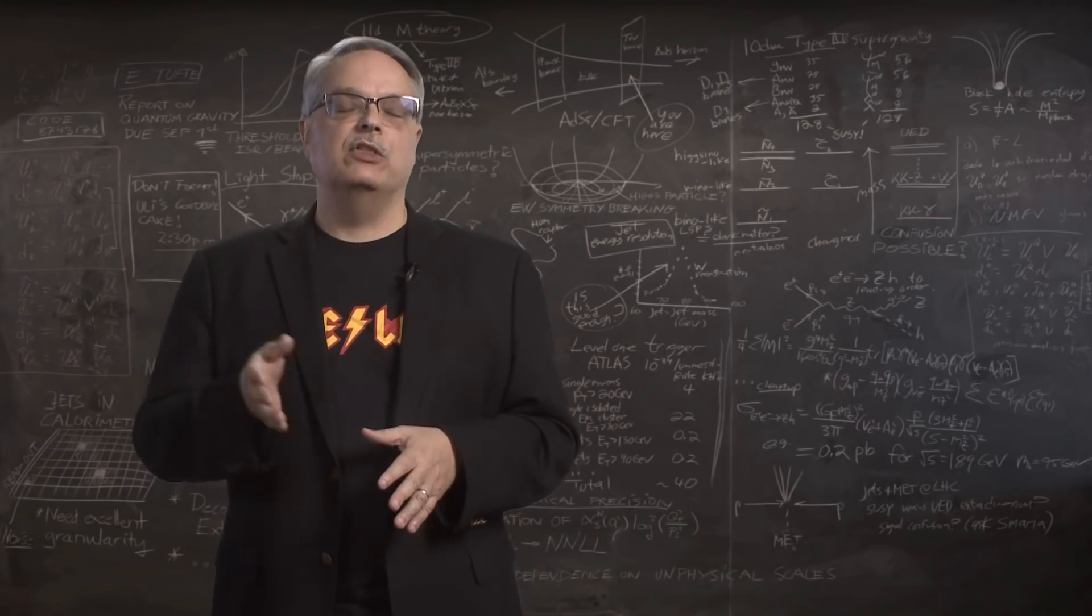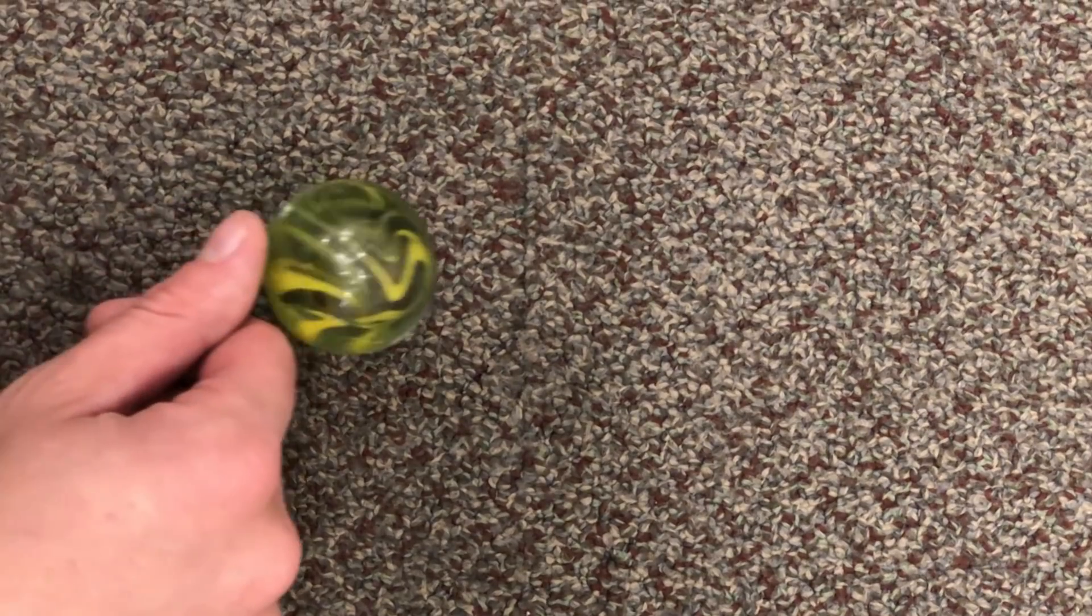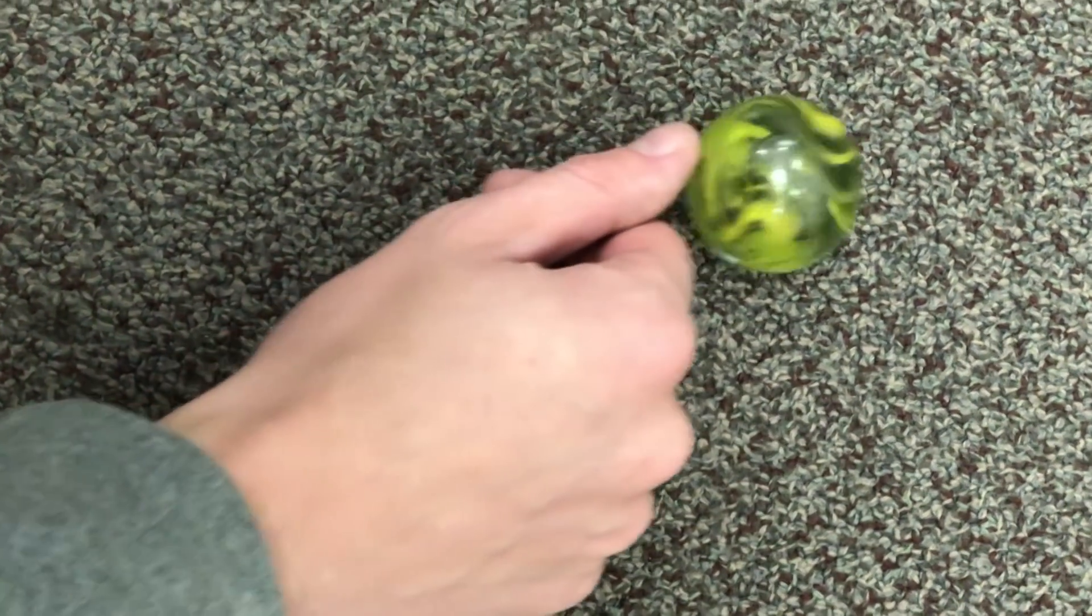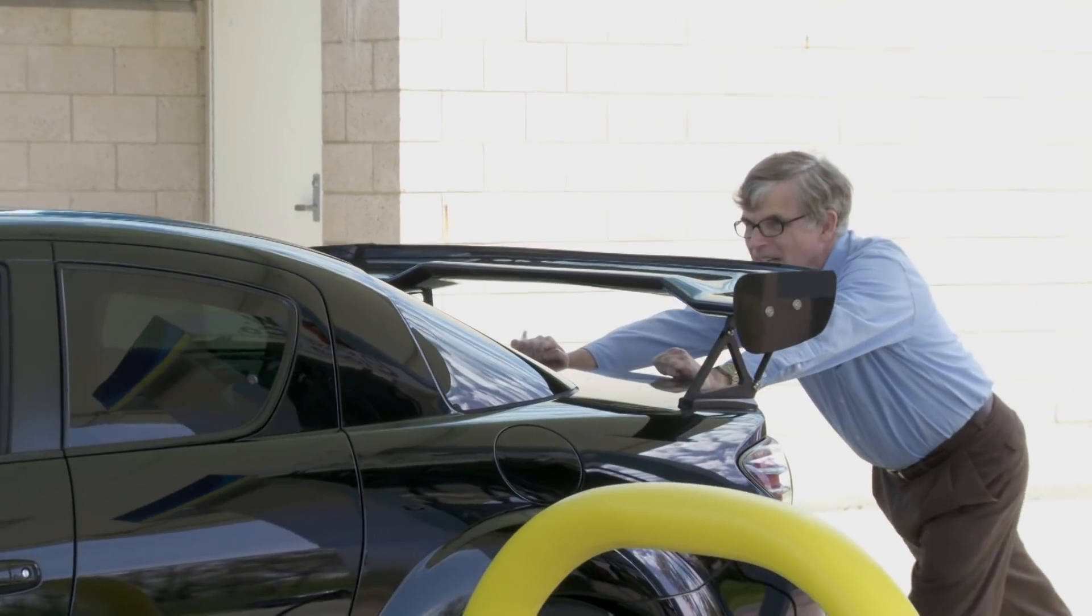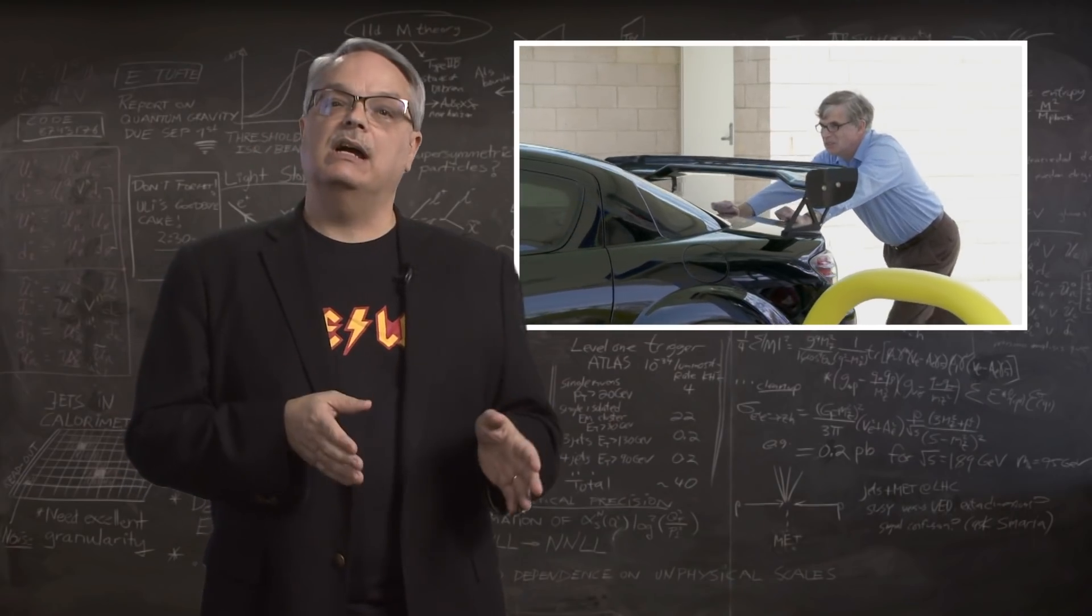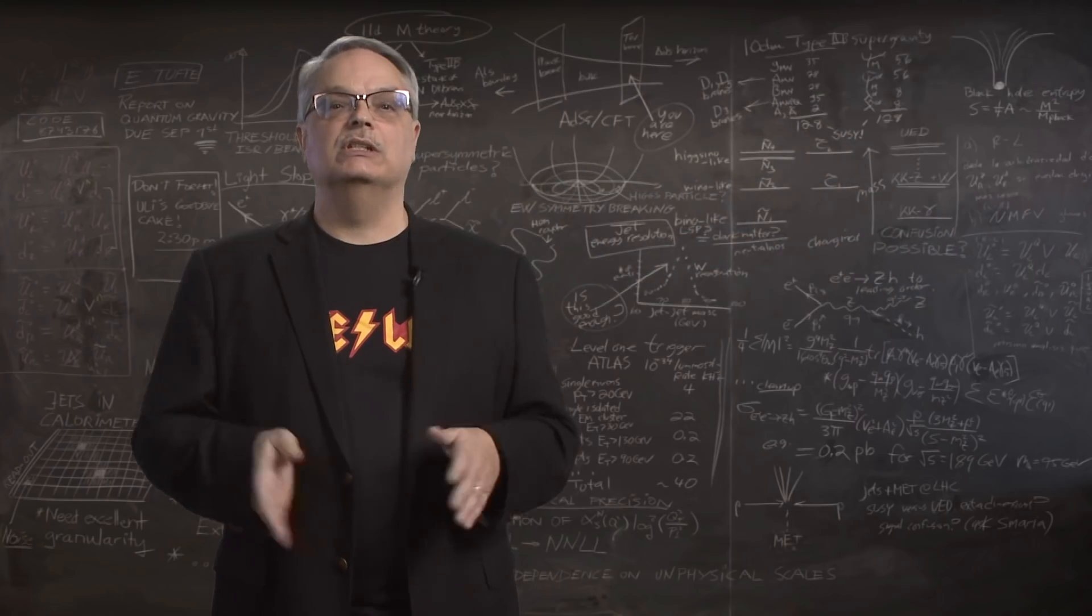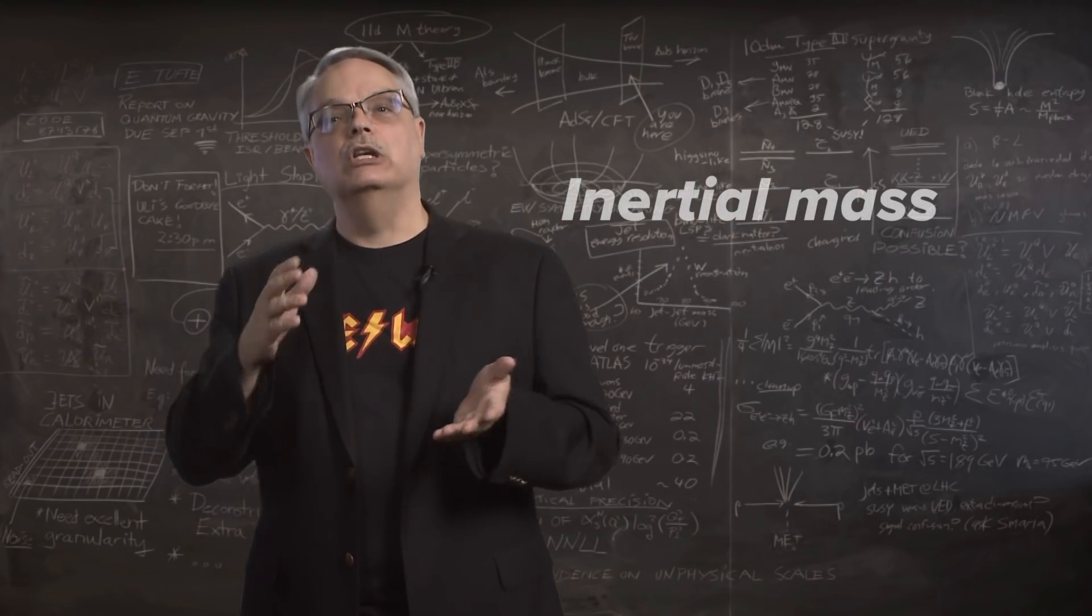One type of mass is the mass that resists motion. Push a marble and it moves extremely easily, whereas if you try to push a car, it's a lot harder. This is tied to the notion of inertia and therefore it's called inertial mass.